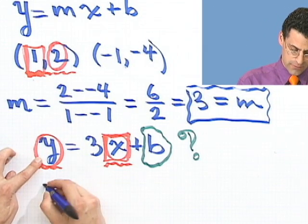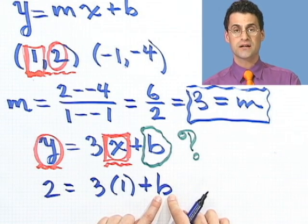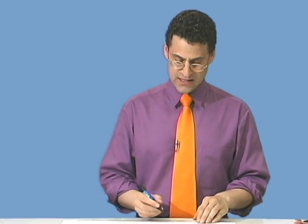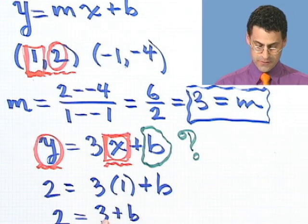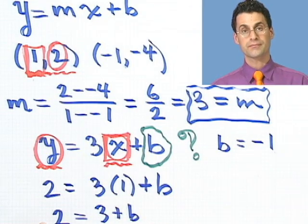Well, here I'd see 2 equals 3 times 1 plus b. I still don't know what b is, but now I have an equation and I can solve for b. By substituting one of the points that must lie on the line, I will have an equation that just has b and everything else is a number. So I can solve for b. In this case, 2 equals 3 plus b. If I bring the 3 over as -3, I see that b must equal -1.